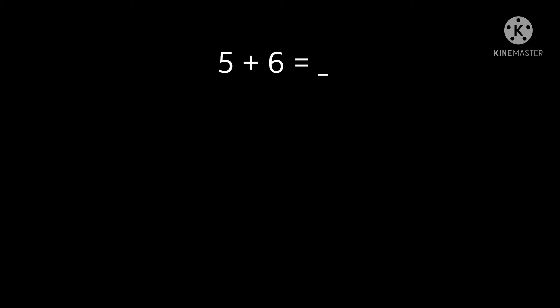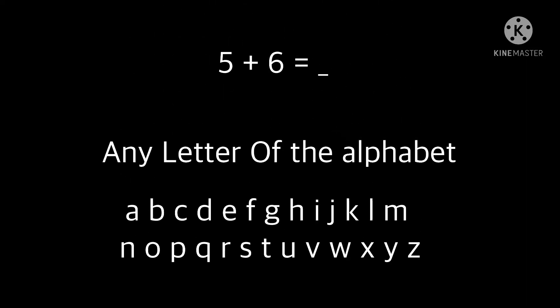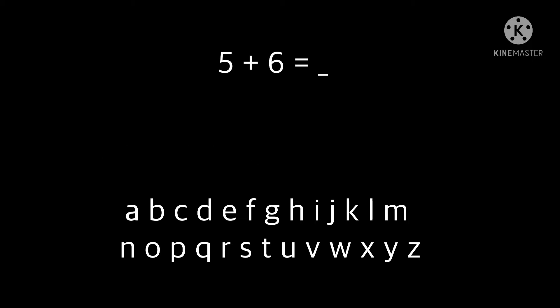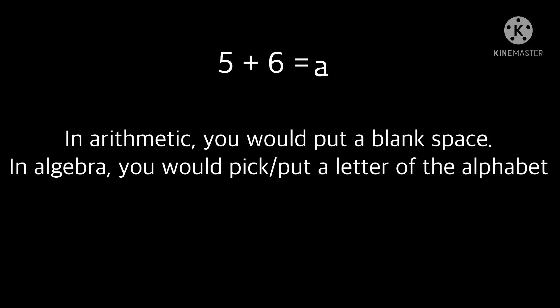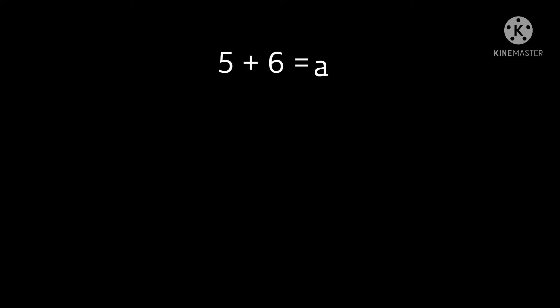You only do the blank space in arithmetic. In algebra we do it a little bit differently — instead of putting a blank space, we replace it with any letter of the alphabet. Let's pick 'a' for instance, so now we get the equation: five plus six equals a. That is what algebra is — you are representing a number as a letter of the alphabet.